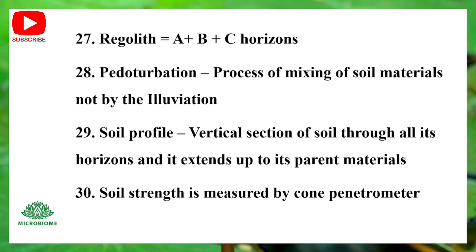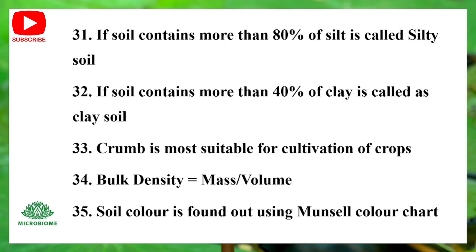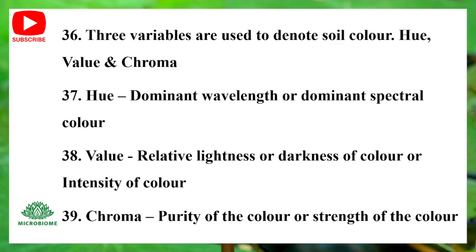Soil strength is measured by a cone penetrometer. If soil contains more than 80% silt, it is called silty soil. If soil contains more than 40% clay, it is called clay soil. Crumb structure is the most suitable for cultivation of crops. Bulk density is mass divided by volume. Soil color is determined using the Munsell color chart, using three variables: Hue (dominant wavelength or spectral color), Value (relative lightness or darkness), and Chroma (purity or strength of the color).